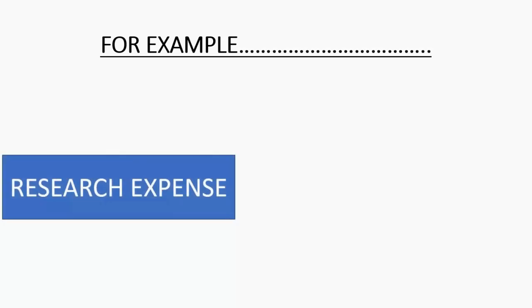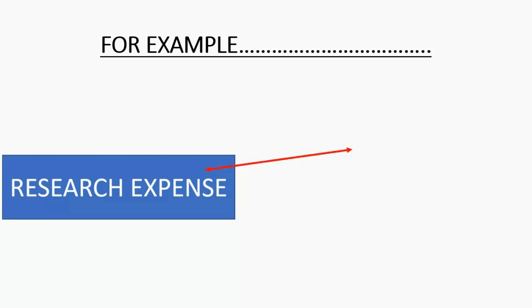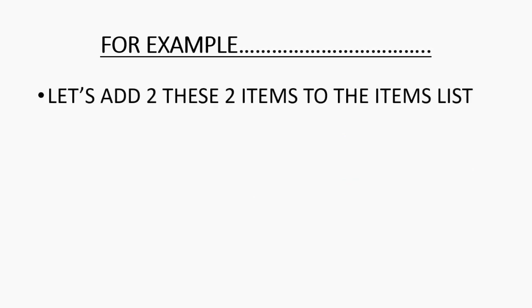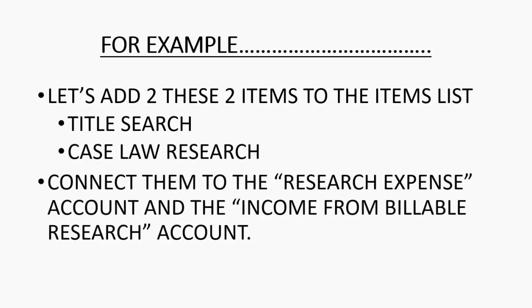For example, if we have a Research Expense account, we could bill that the way we learned earlier in the course with just the account. But if we want to bill with more details on the invoice, we can make two items associated with Research Expense: Title Search and Case Law Research. These could be two separate items tracked to the expense account. We'll add both items to the items list and connect them to the Research Expense account and the Income from Billable Research account.